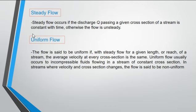We have also uniform flow. The flow is said to be uniform if with steady flow for a given length or reach of a stream, the average velocity at every cross-section is the same. Uniform flow usually occurs in incompressible fluids flowing in a stream of constant cross-section. In streams where velocity and cross-section changes, the flow is said to be non-uniform.